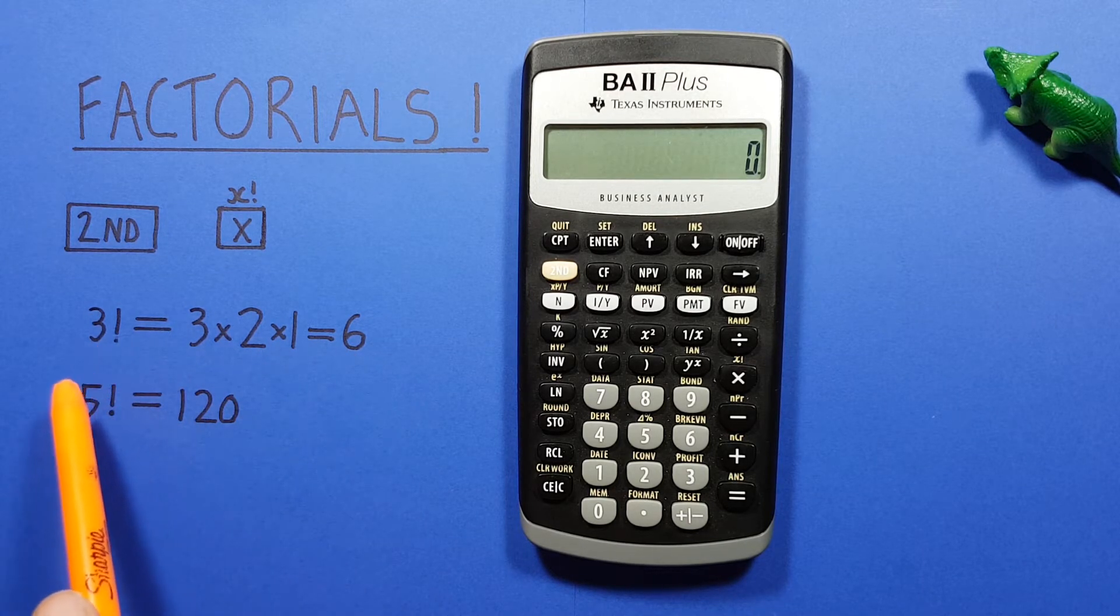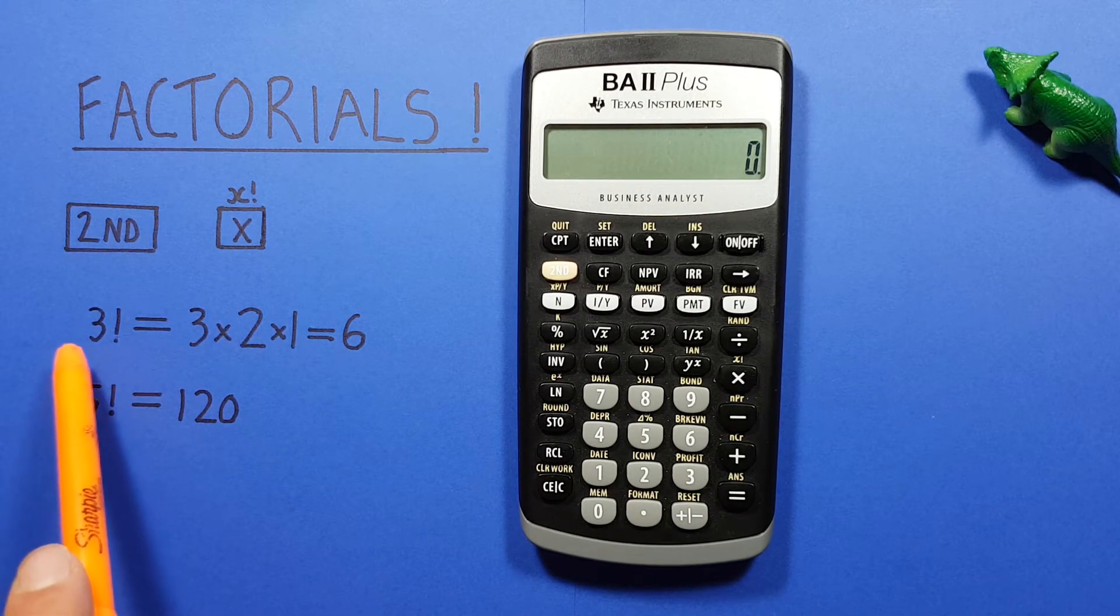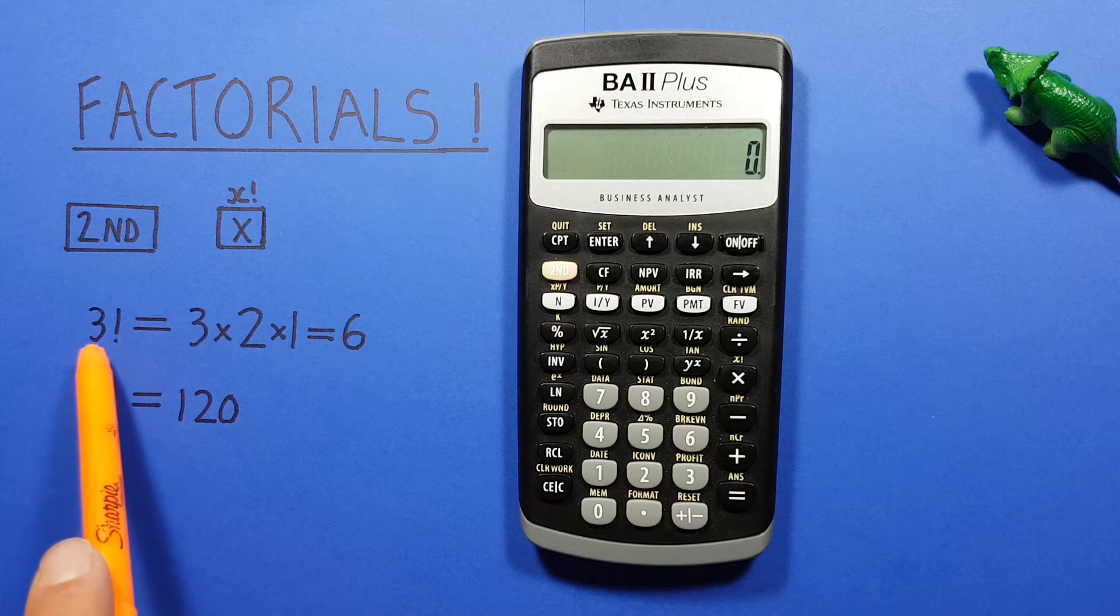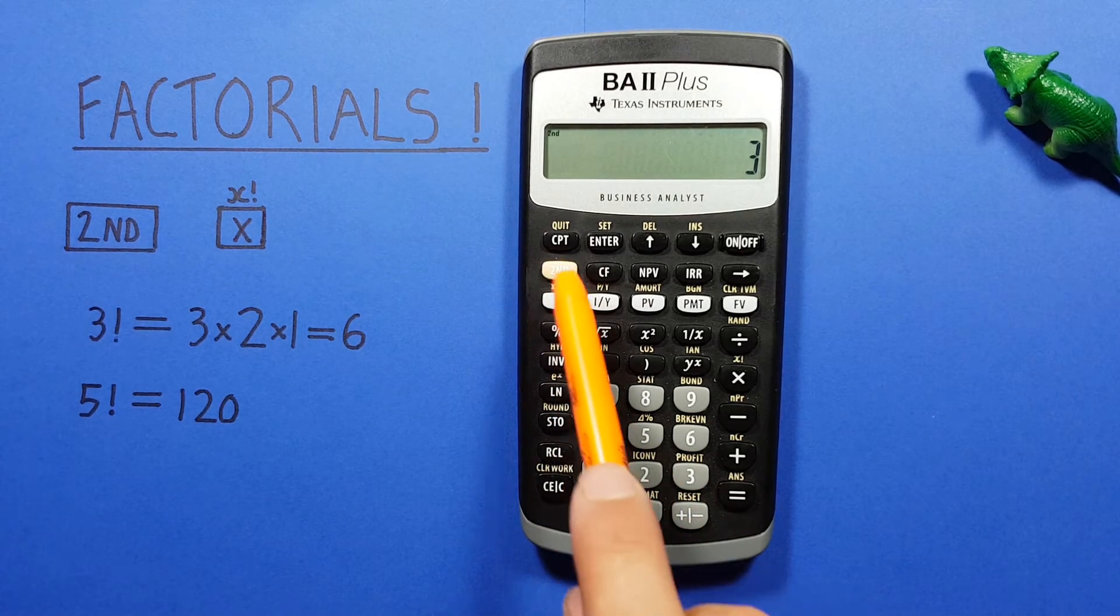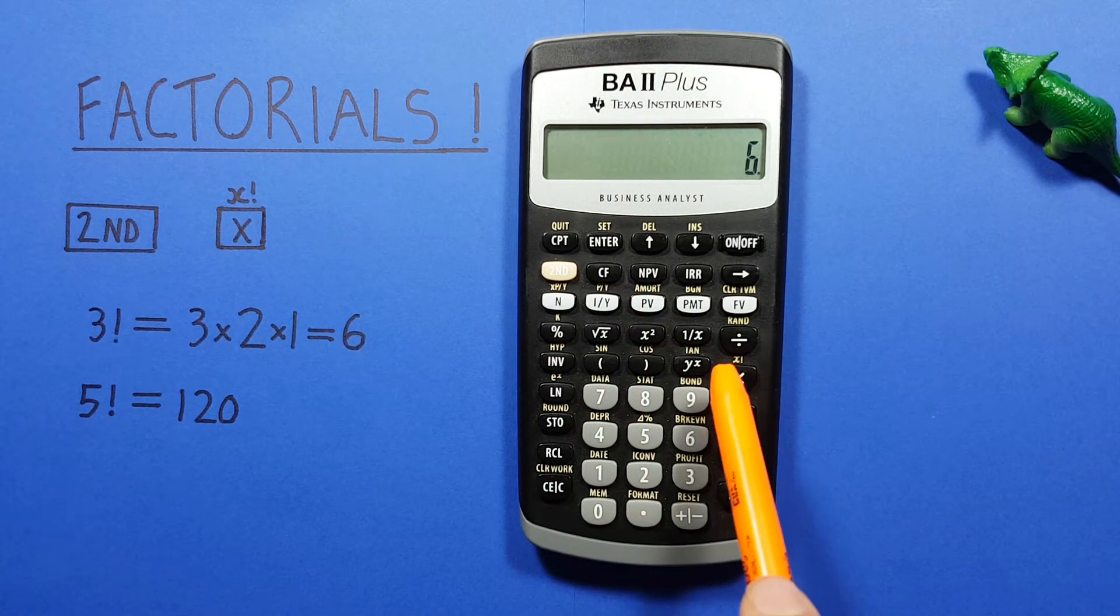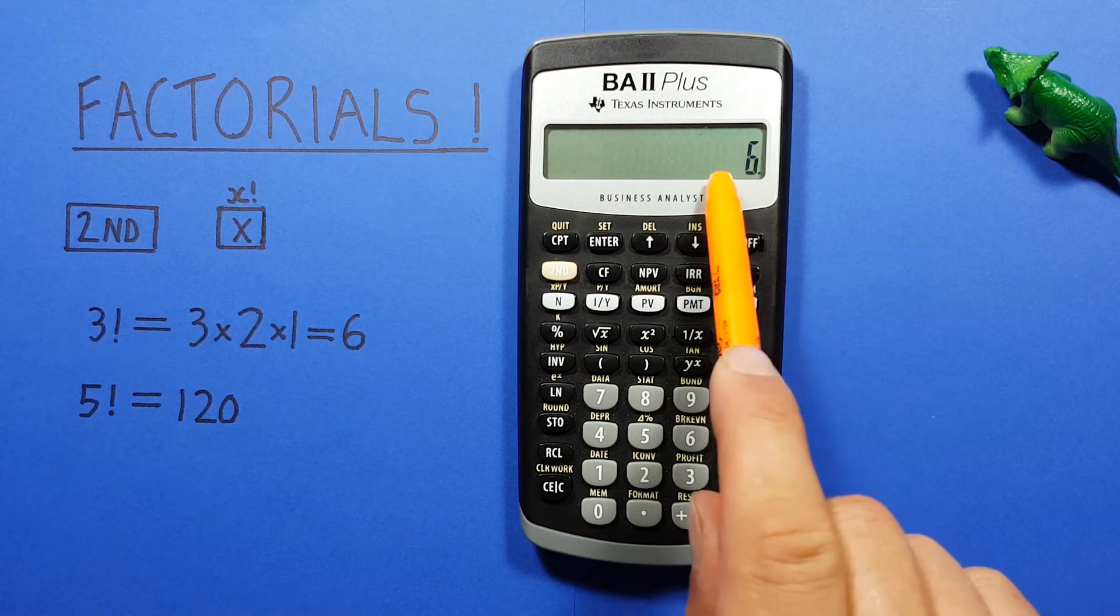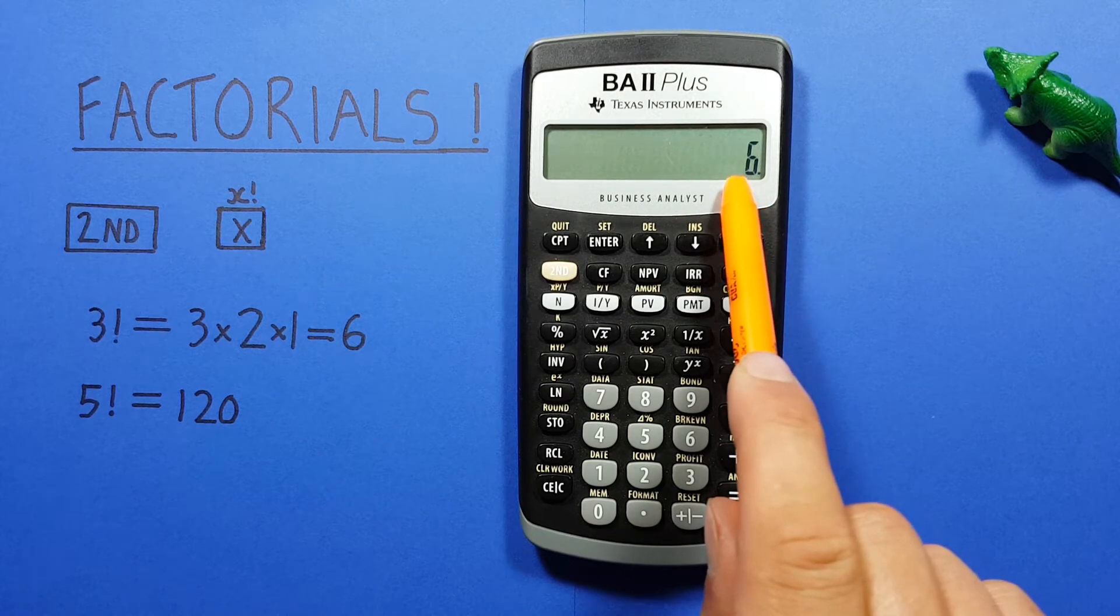But we can also use the factorial function. To do that, we start by entering the number, so 3, and then the second function key and then the multiplication key here. We immediately get the result of 3 factorial which is 6.